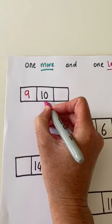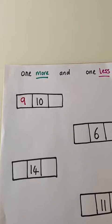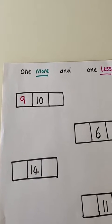Nine comes before 10. If you have 10 pens and you take one away, one less than 10 is nine.